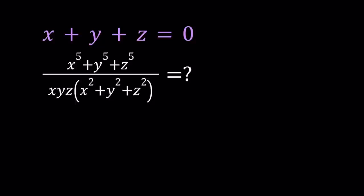In this video we're going to be simplifying a rational expression. We're given that x plus y plus z is equal to 0, and we're supposed to evaluate x to the fifth power plus y to the fifth power plus z to the fifth power, divided by x, y, z times the quantity x squared plus y squared plus z squared.